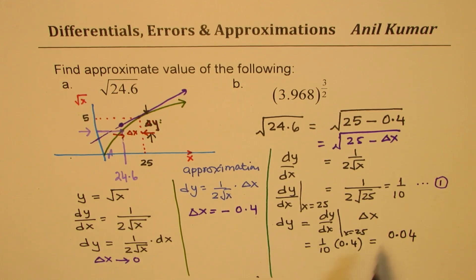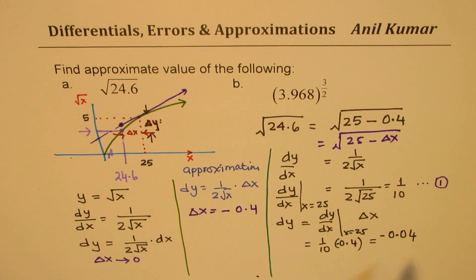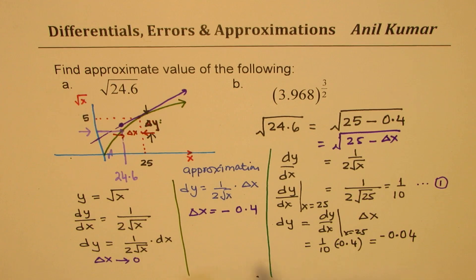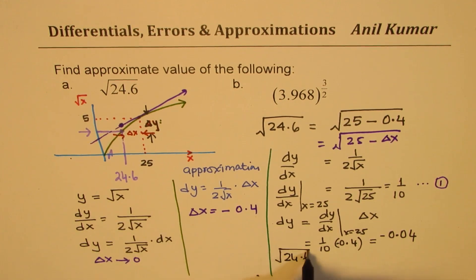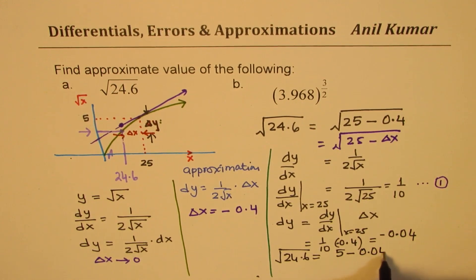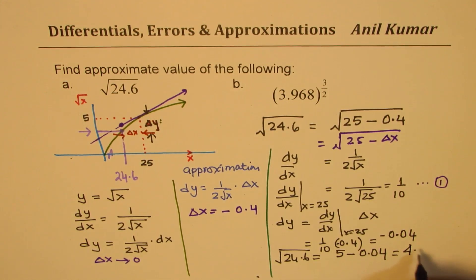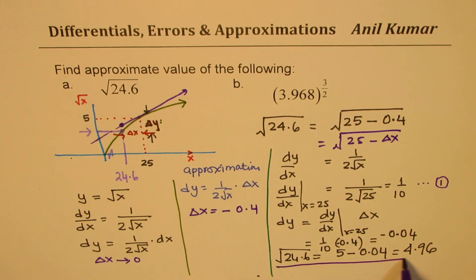So delta y is with a negative sign, since this was negative — so that is the change. And therefore, the value of square root of 24.6 should be equal to 5 minus 0.04, which is 4.96. So that is the approximation.